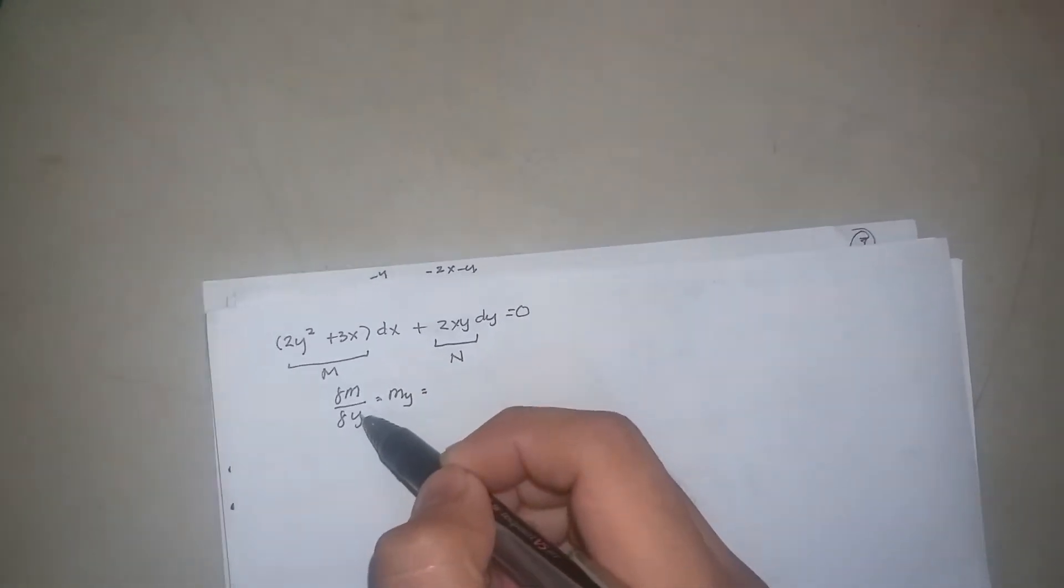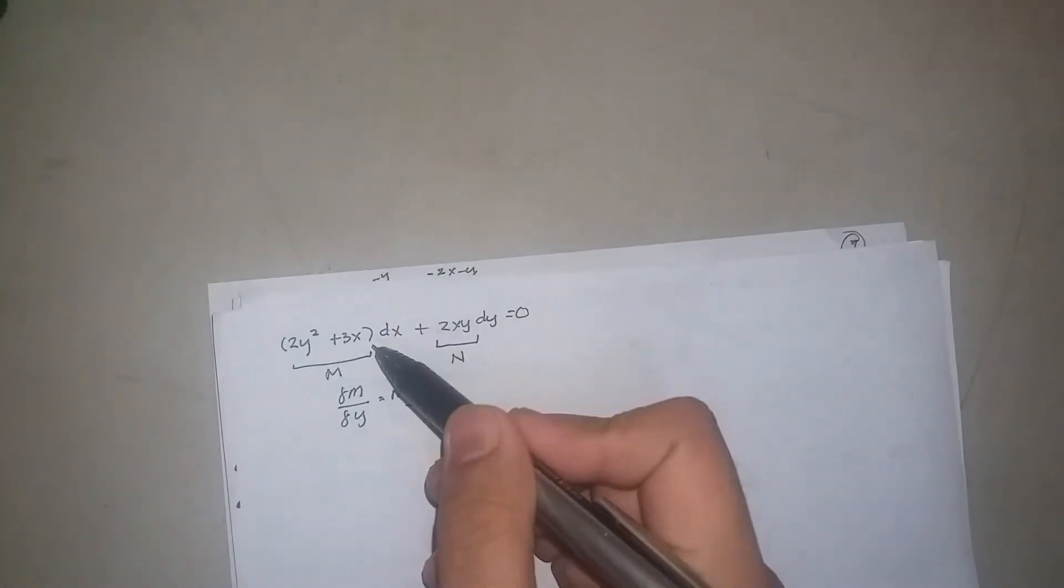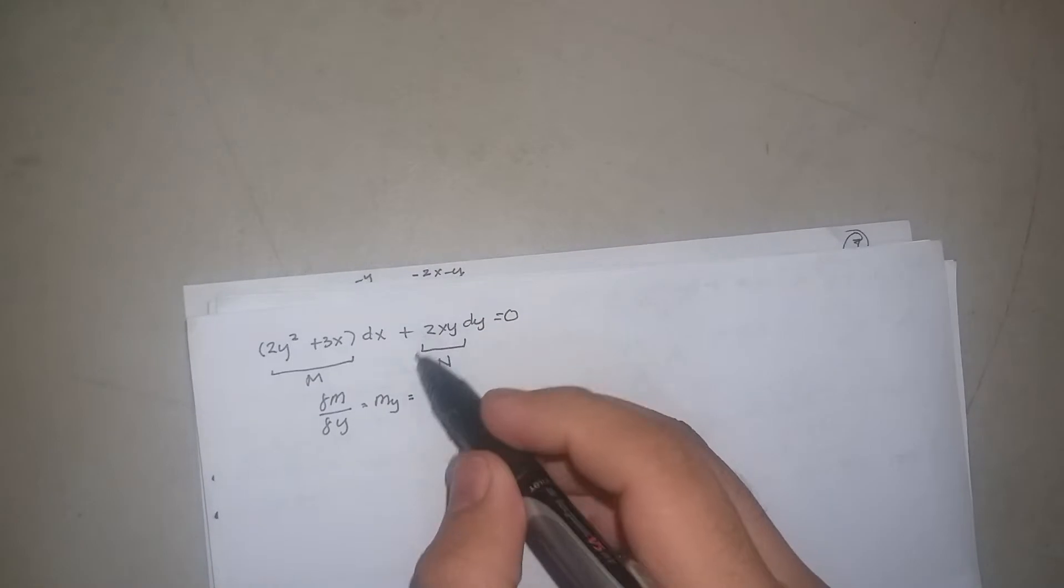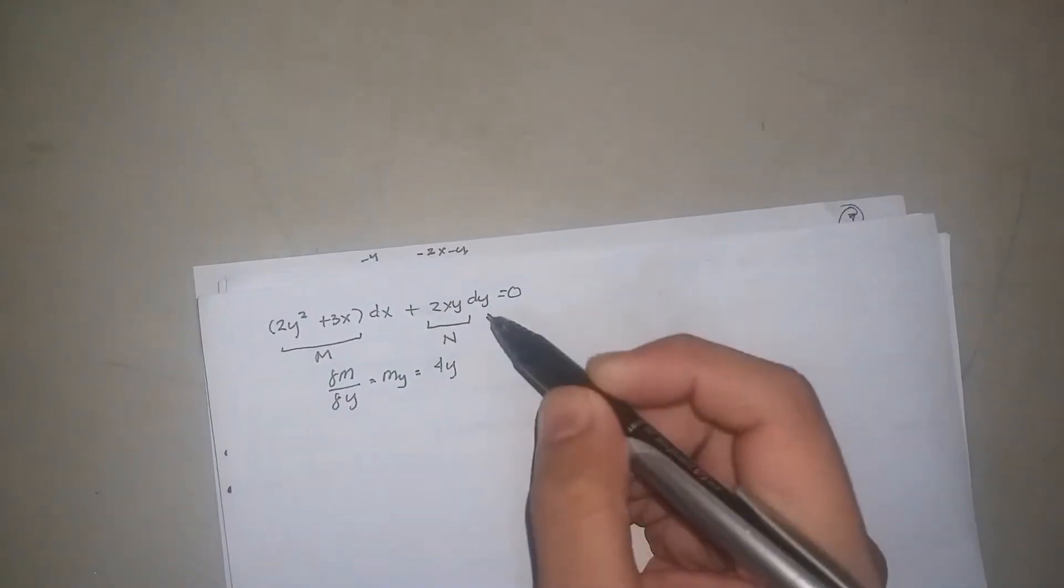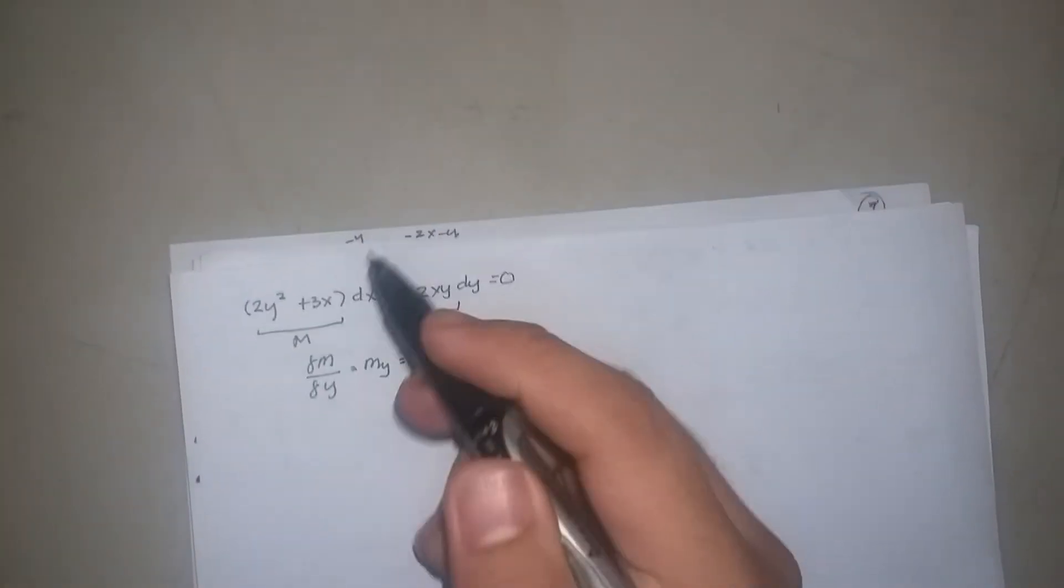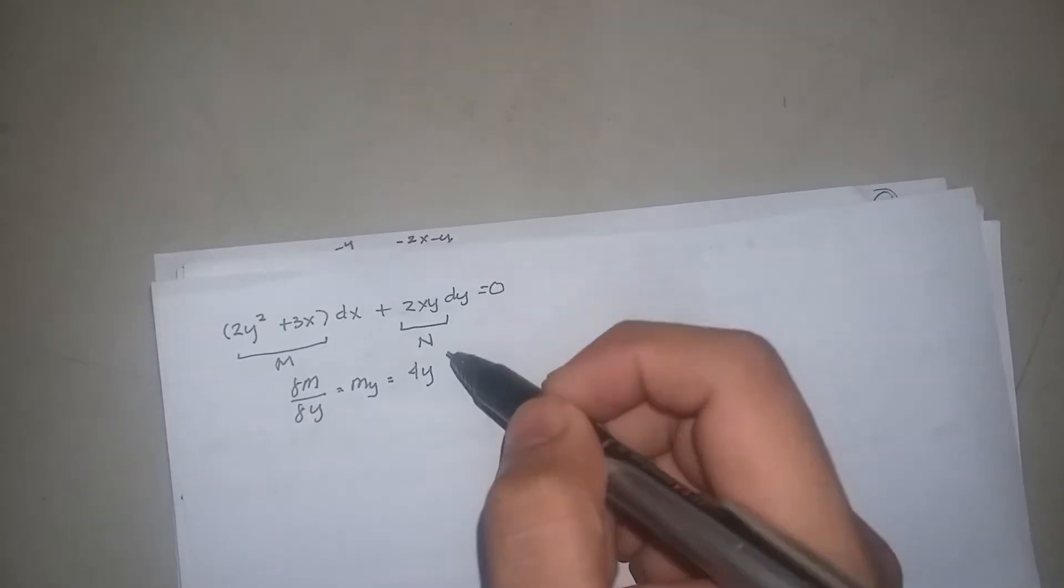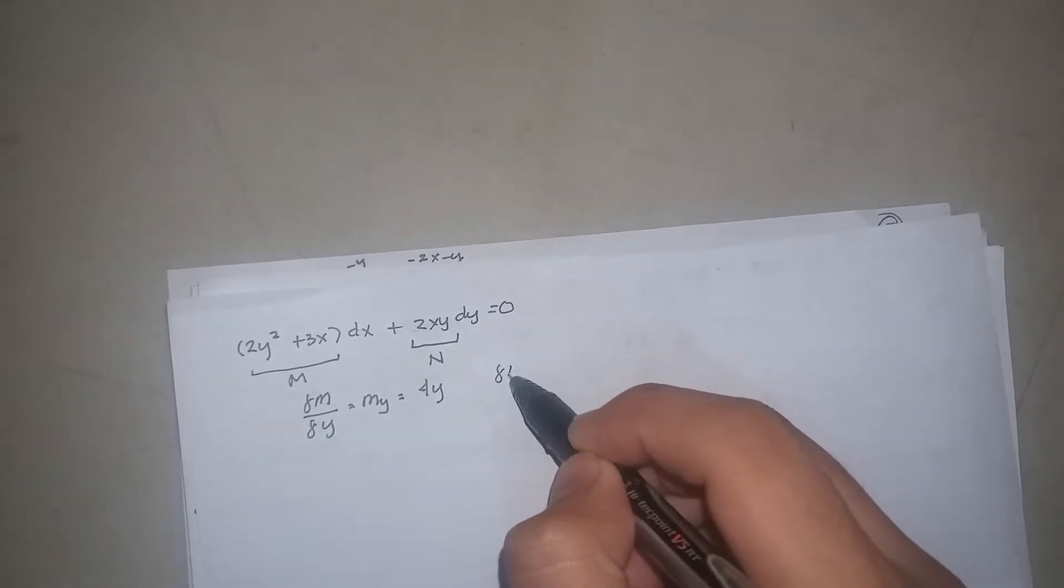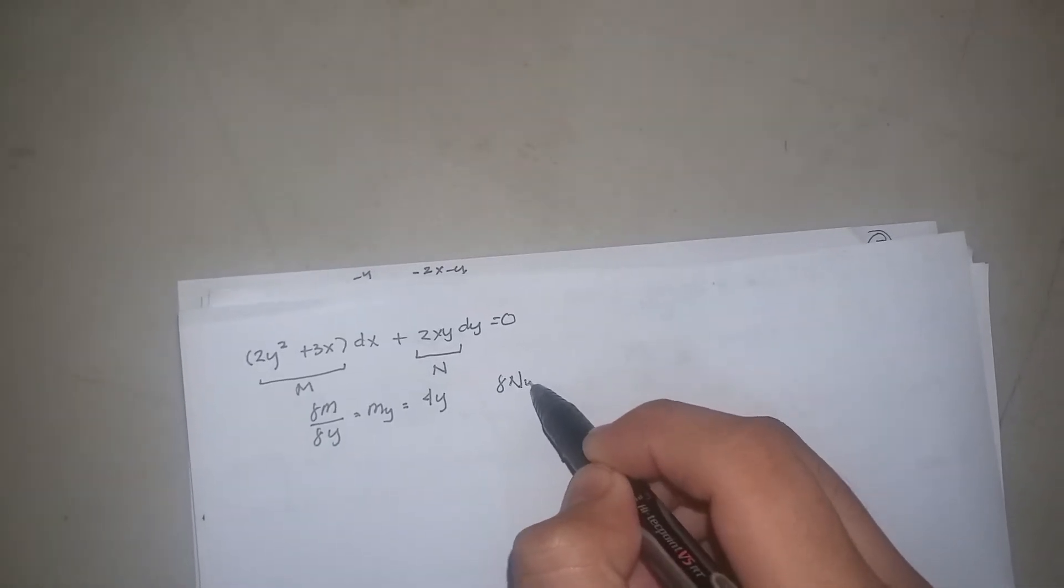If this is with respect to y, x is constant, so if we derive it, it's gonna be 4y, and this one is a whole constant, so therefore it is 0. Then we're gonna check if partial derivative of N with respect to x...